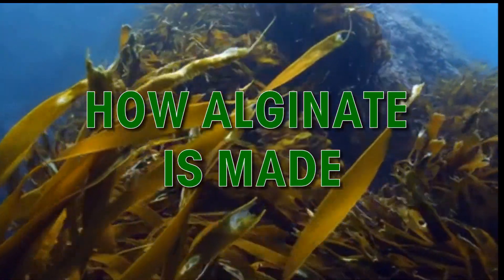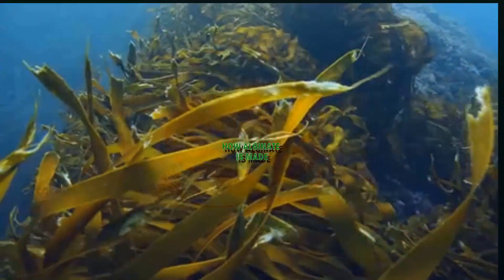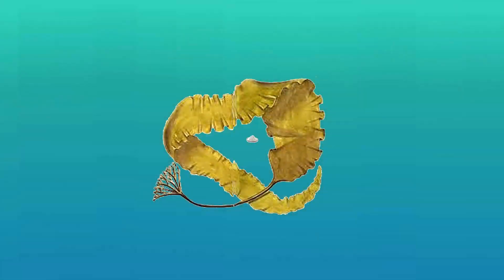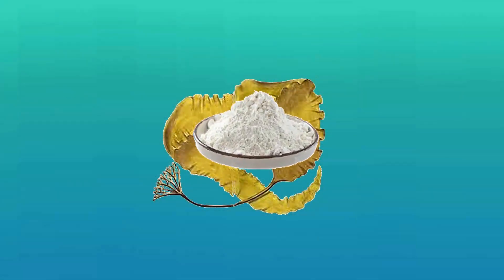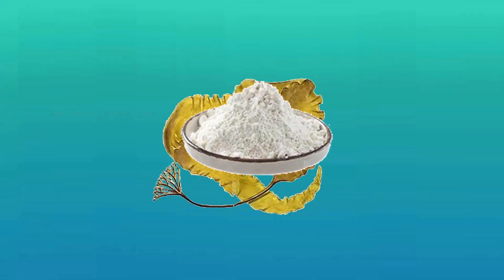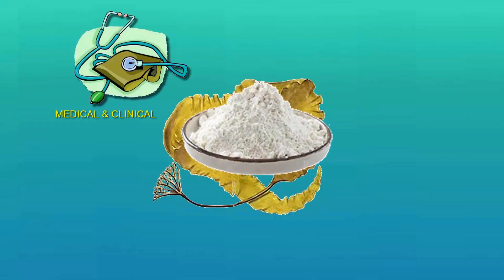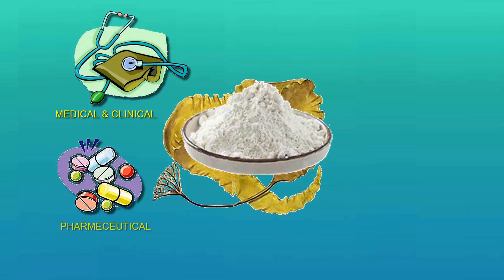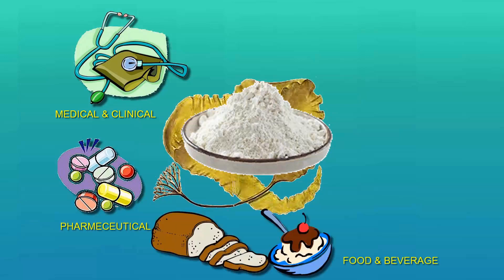Alginate is an important raw material made from refined seaweed, which is used in a number of industries, such as a wide array of medical and clinical applications. It has a number of applications in the pharmaceutical industry. In the food and beverage industry, it is used as a thickener, softener, and binder.